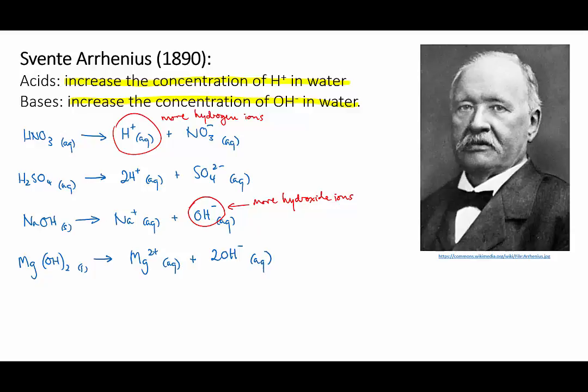However, Arrhenius's definition runs into problems when you probe a bit more deeply. Because what about ammonia? Ammonia has the formula NH3, and if you play around with it, you find that it has the properties of a base. But how does it increase the concentration of hydroxide in water? It has no hydroxide ions in it. So Arrhenius's definition was clearly incomplete, and it needed some further work.